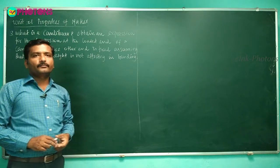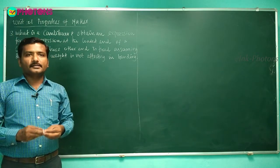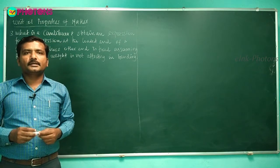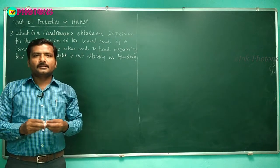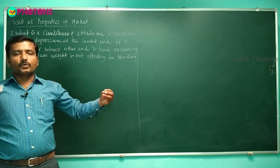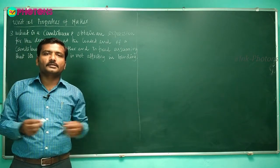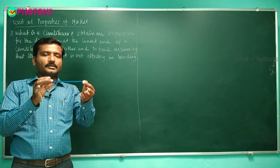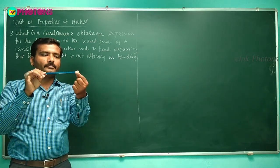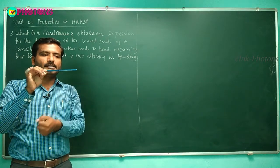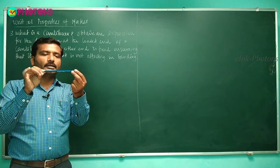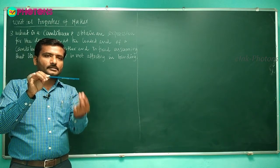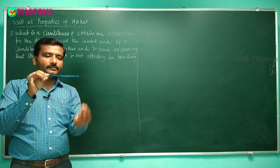A cantilever is a horizontal rod whose one end is fixed and the other end is loaded. For example, take a pencil as a rod. If I fix one end and apply a load on the other end, without load it looks horizontal, but if we apply load it will bend according to the amount of load applied.